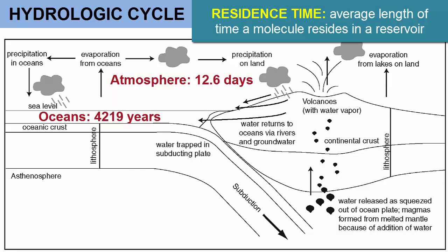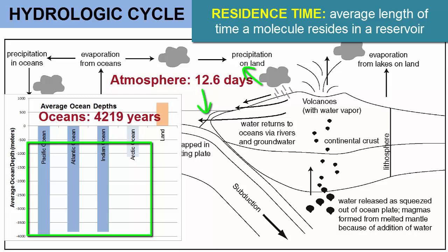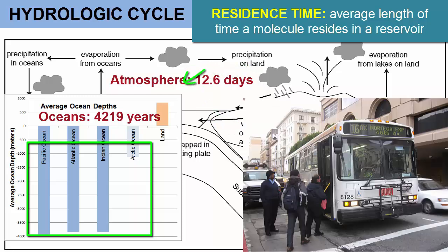Why the difference? There is so much deep water in the oceans that isn't in contact with the atmosphere. That makes the oceans a large, stable storage reservoir. The atmosphere, on the other hand, is short-term storage where water resides on average a little less than two weeks. Water enters and leaves easily and quickly through evaporation and precipitation — like a city bus with passengers getting on and off at stops along the way.